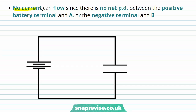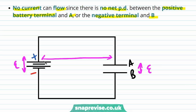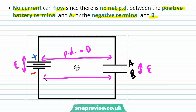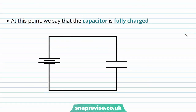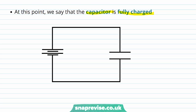No current can flow since there is no net potential difference between the positive battery terminal and plate A, or the negative terminal and plate B. When the potential difference across the battery equals the potential difference across plates A and B, the potential difference between the positive terminal and A is zero, and between the negative terminal and B is zero. At this point the capacitor is fully charged.